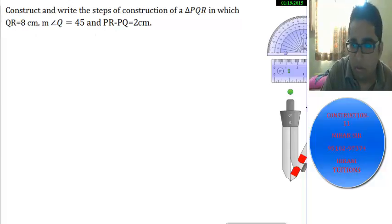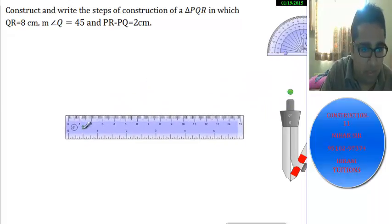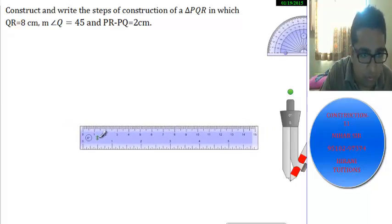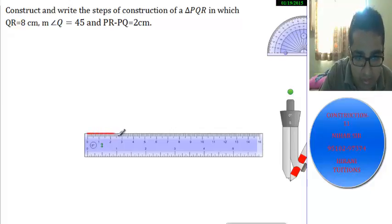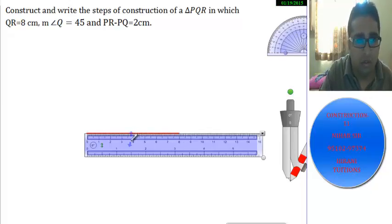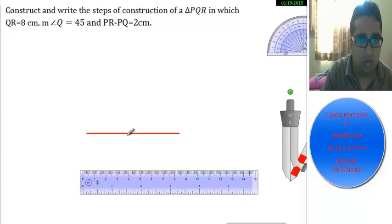First of all we will draw line segment QR equal to 8 centimeters. Let me draw it in the middle of the page so there won't be a shortage of space anywhere. Let's draw the line of 8 centimeters. It's done — it's 8 centimeters. Now we have been told that its name is QR, so here I will name it Q and here I will name it R.